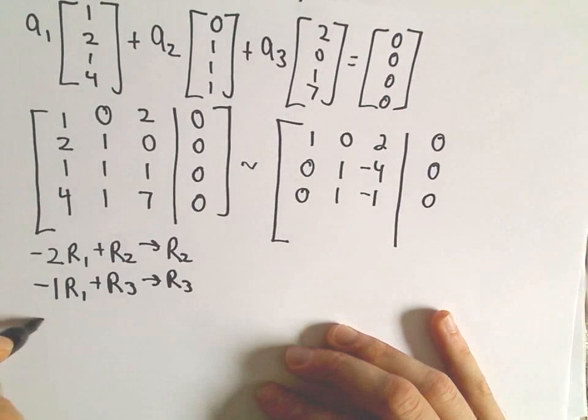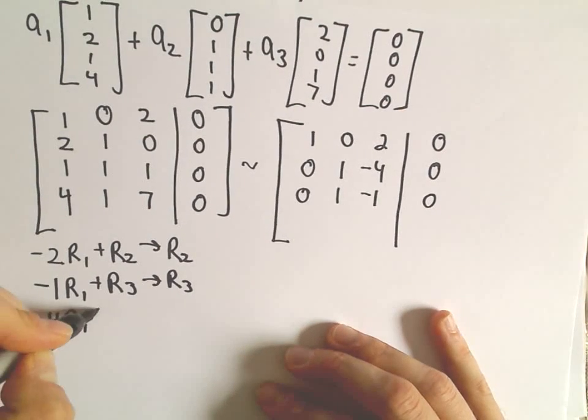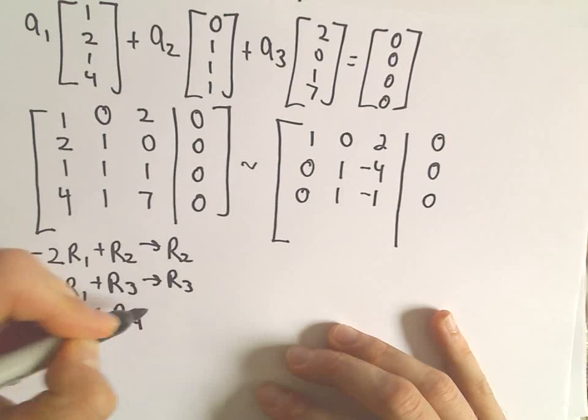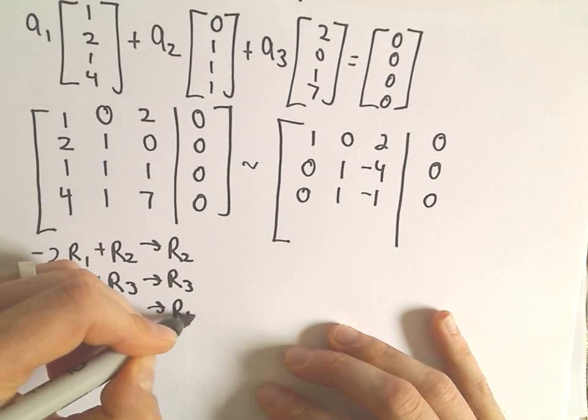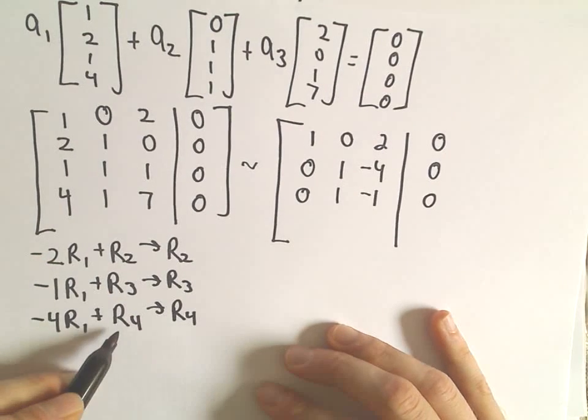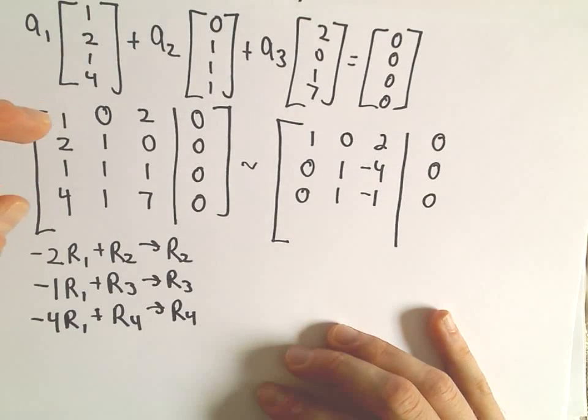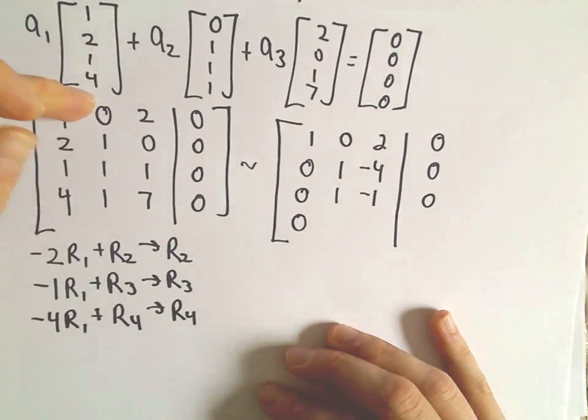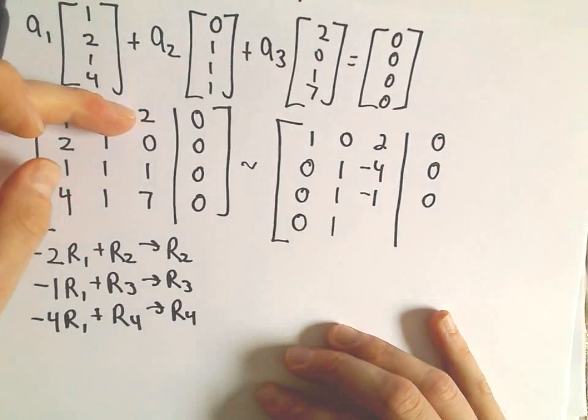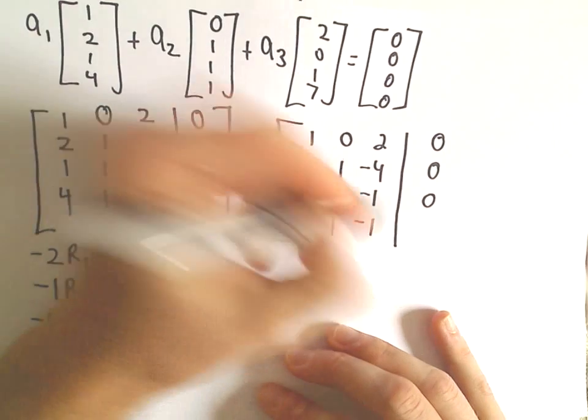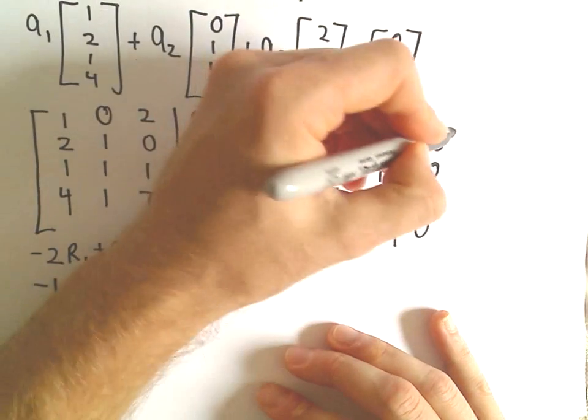We can do negative 1 times row 1 add that to row 3 to get my new row 3. So we'll get negative 1 plus 1, which is 0; 0 plus 1, which is 1; negative 2 plus 1, which is negative 1; and again a 0. Then negative 4 times row 1 plus row 4 to get our new row 4. So negative 4 plus 4 is 0; 0 plus 1 is 1; negative 8 plus 7 is negative 1, and then 0.